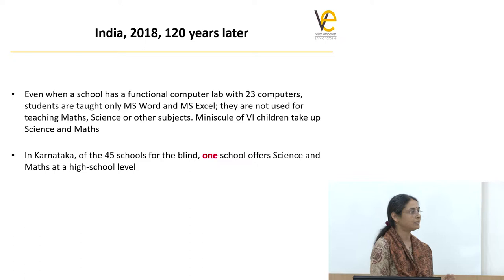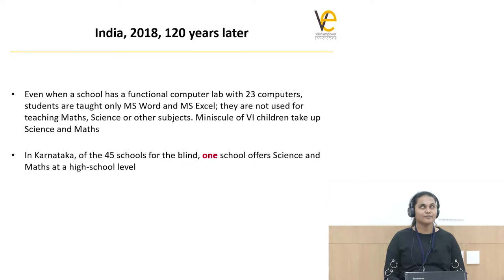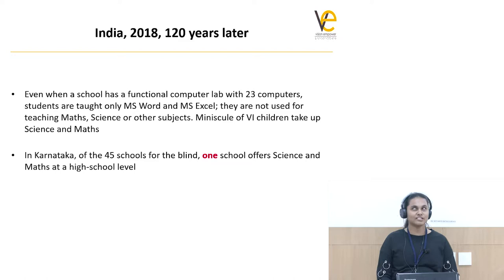Juxtapose this to India 120 years later. There are computers in blind schools — many people donate computers because they feel the students can use them, and the computers are working in good condition. But when you go to the school and ask how they're used, they tell you: computer equals Word and Excel. Students just type something on the keyboard and save it in Word. That's the basic functionality they use — not for any academic purposes.